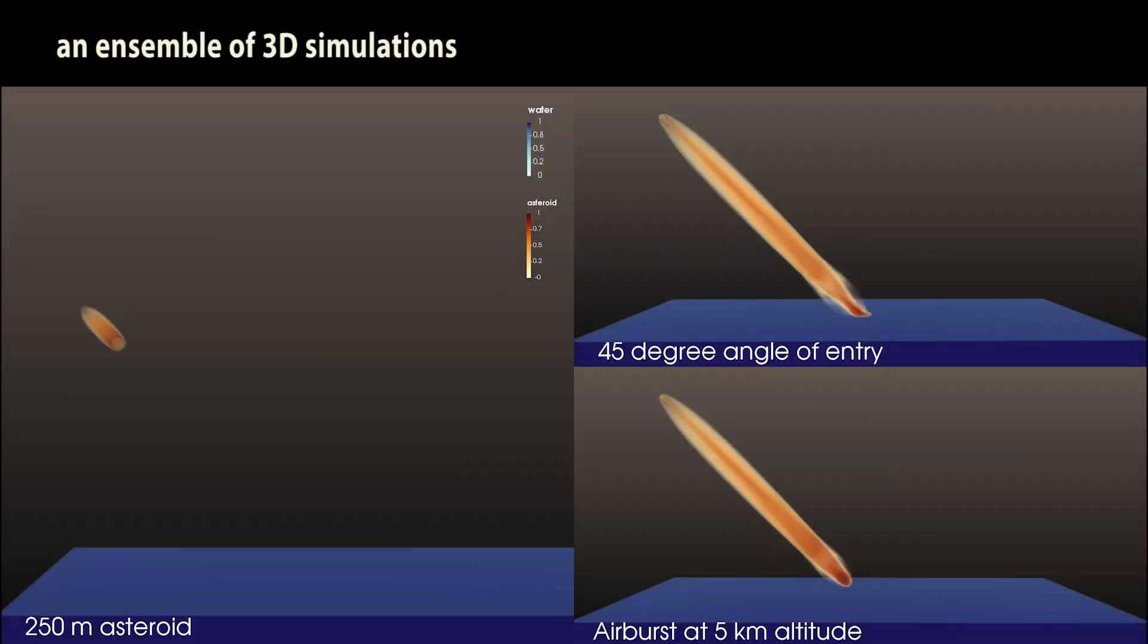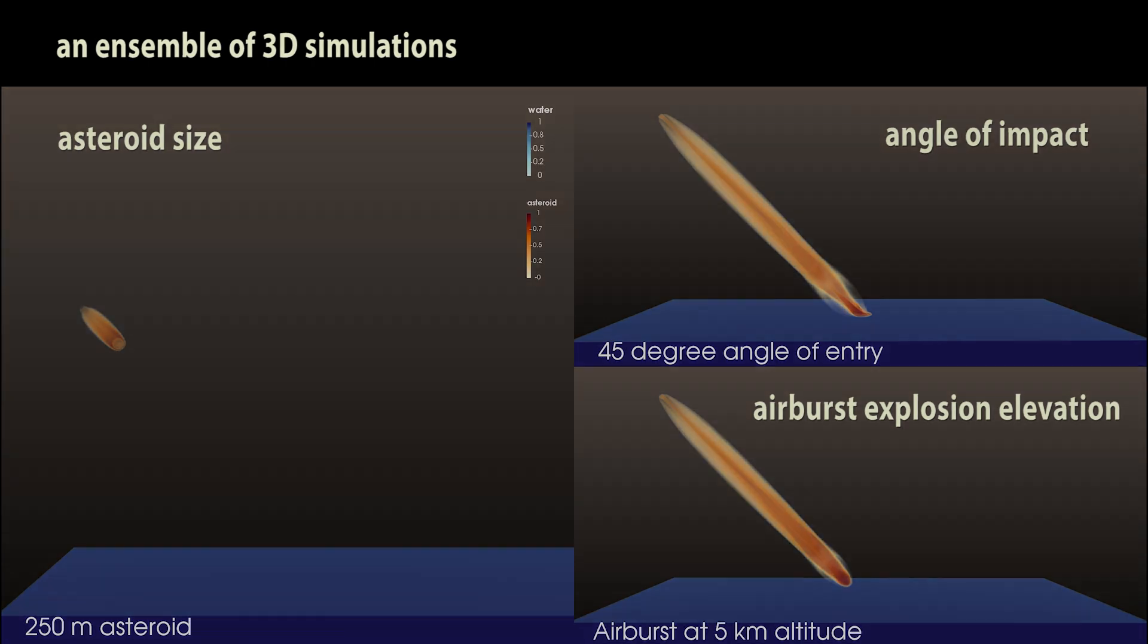Los Alamos scientists ran an ensemble of 3D simulations, varying the asteroid's size, the angle of impact, and whether or not the asteroid exploded in an airburst before impact. The height of this airburst was also varied.